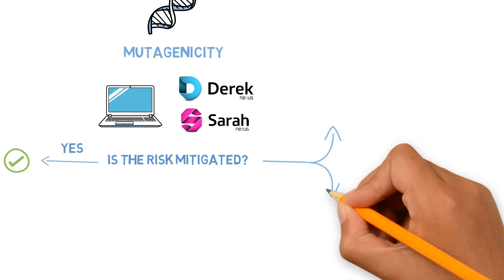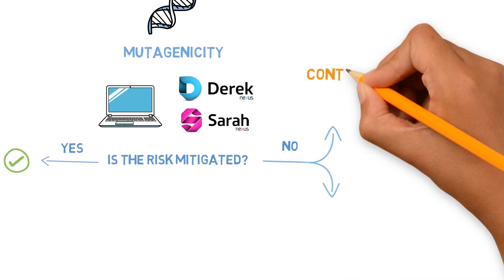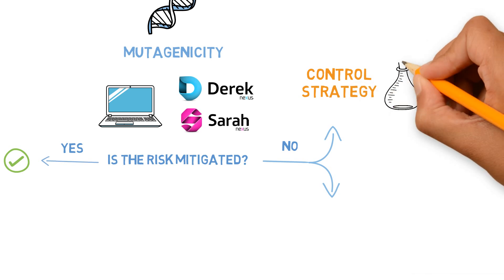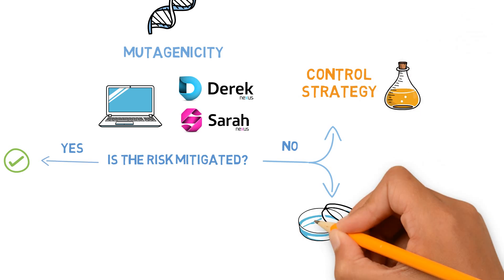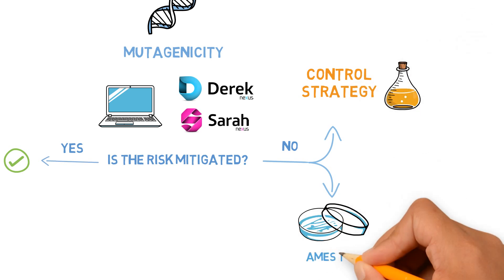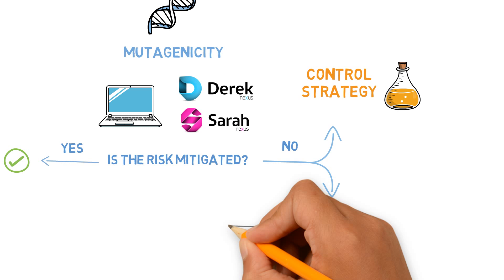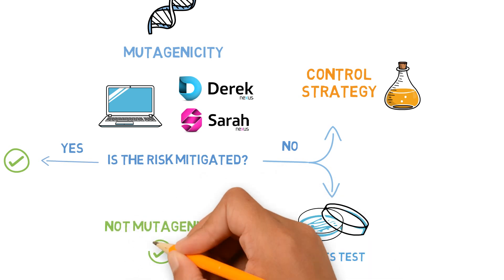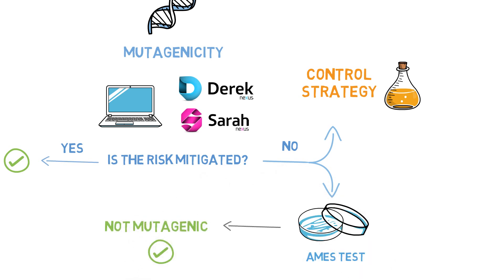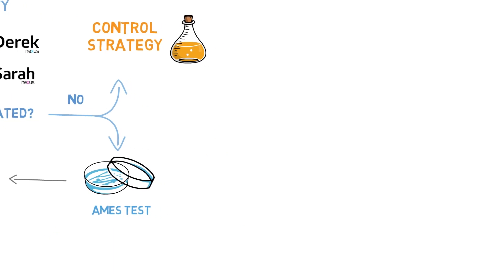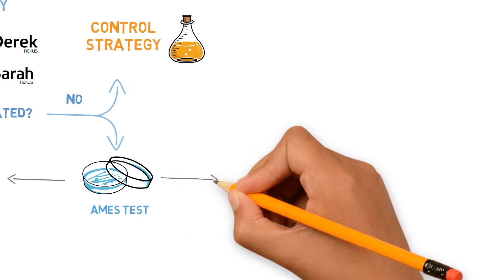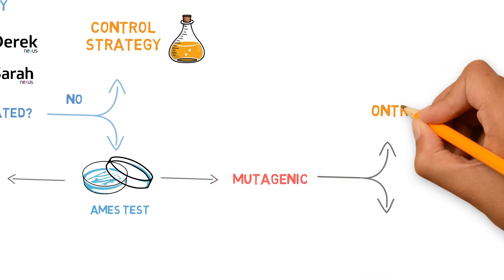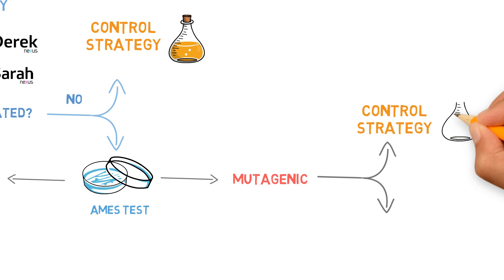Based on ICH M7, when this is the case, we can either apply a control strategy or we can choose to perform the AMES test to confirm the mutagenicity. But is it worth it to perform the AMES test? If the result is positive, you would either need to control it anyway or follow up with in vivo tests.